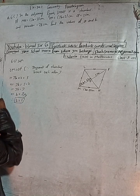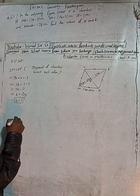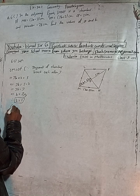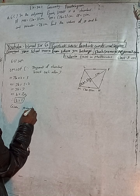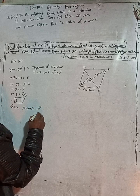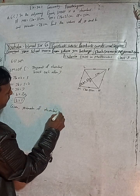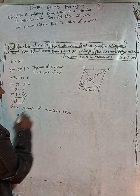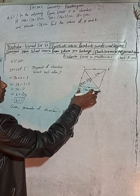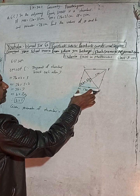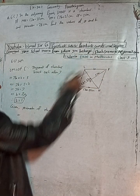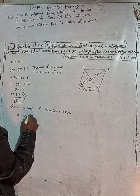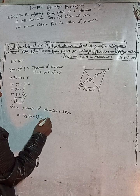So B is equal to 1. Now, the perimeter of the rhombus is given as 28 CM. Perimeter means all four sides added together. In a rhombus all sides are equal — so we write 4 times (2A minus 3) equals 28.